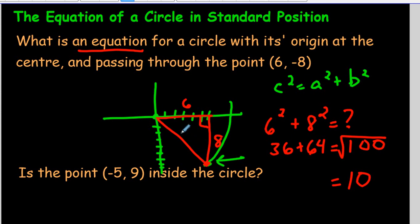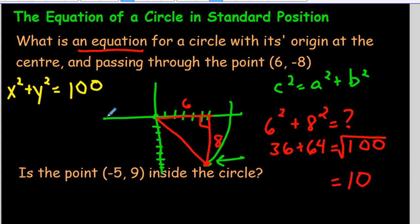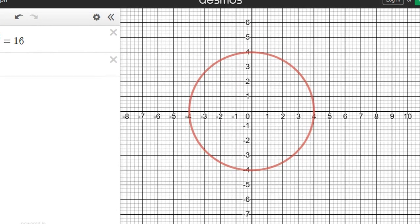Now we know the radius is 10, so what's the equation? We write x squared plus y squared, and that equals not 10 but 100, because we don't write the radius directly — we write the radius squared. If we take the square root of 100 we get 10, and that confirms the radius. Let's verify by typing x squared plus y squared equals 100 into Desmos.